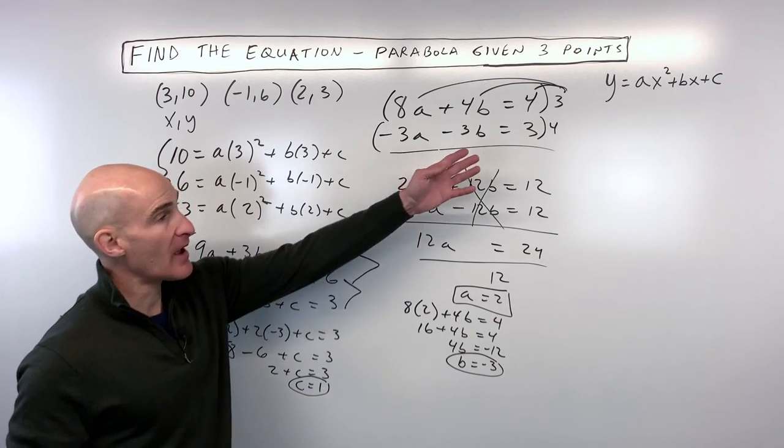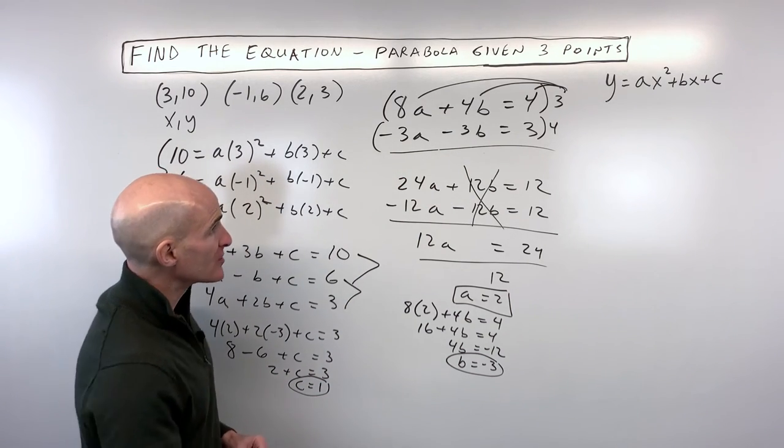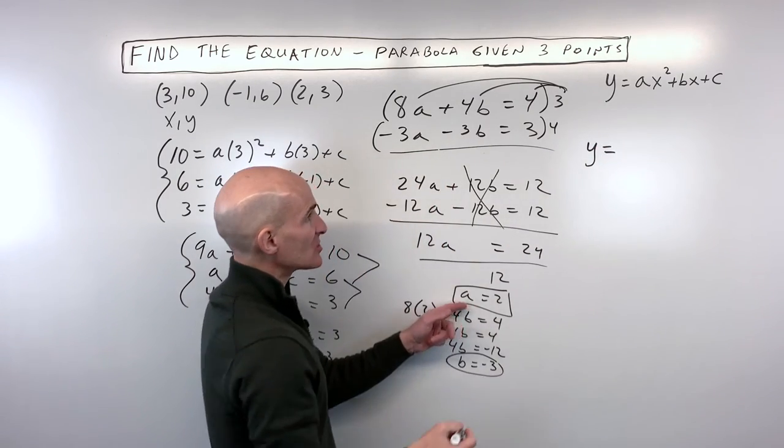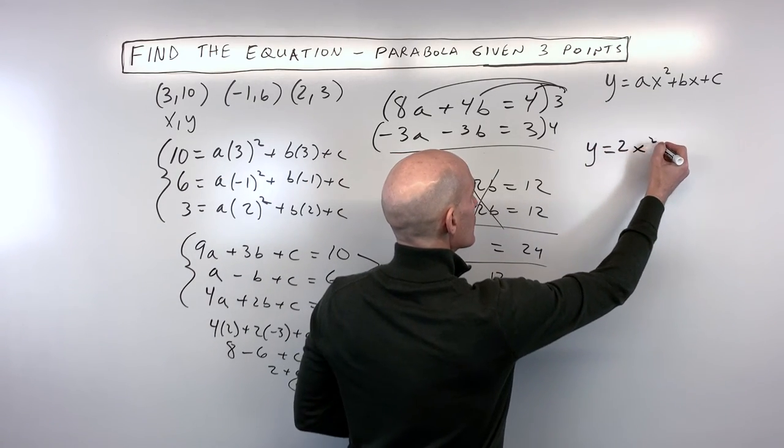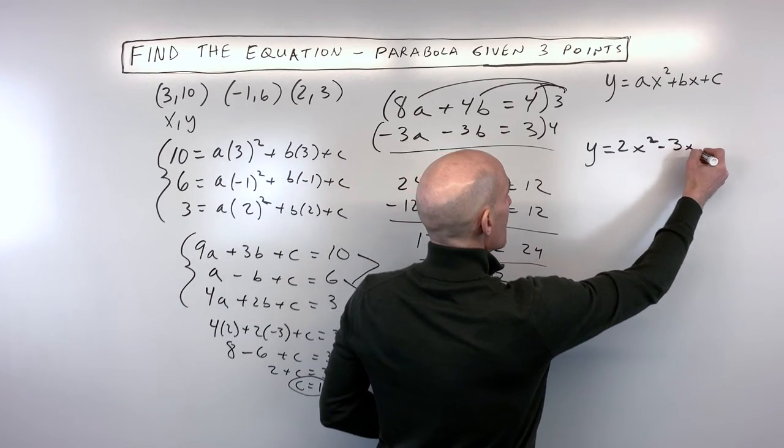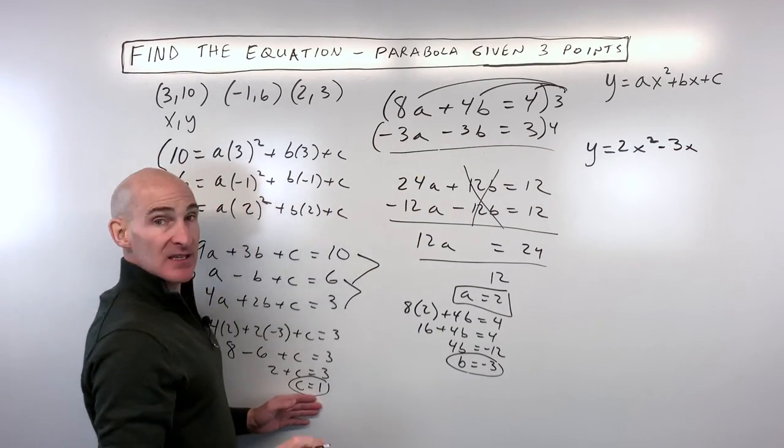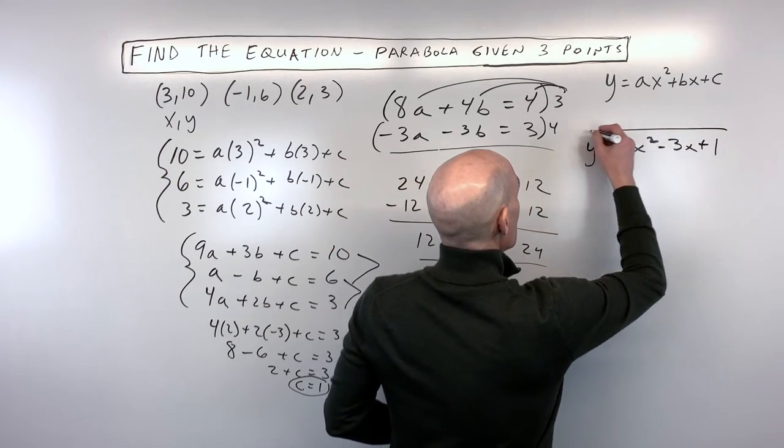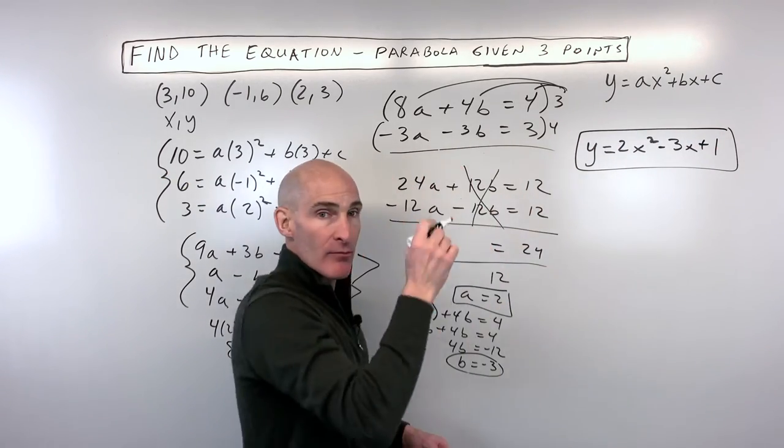So if we put everything back into our equation, let's see what we have. We've got y is equal to a, which is 2. So that's 2x squared. We have b, which is negative 3. So negative 3x. And we have c is equal to 1. And that's the equation of our parabola, our quadratic.